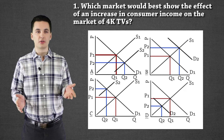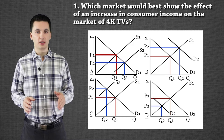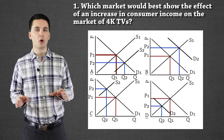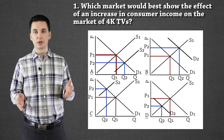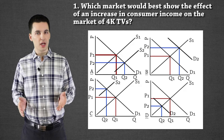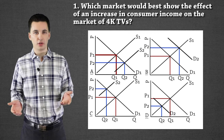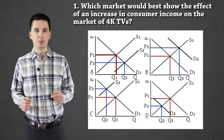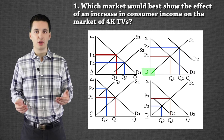The first question asks which market would best show an increase in consumer income for 4K TVs. We're seeing an increase in everyone's income and want to know what happens to 4K TV sales. Since 4K TVs are a normal good, when people have more money they can afford more TVs. If income decreased, people probably couldn't afford these expensive TVs and would buy less. So the answer is B — demand shifts outward. More money means more purchasing of normal goods, so demand increases.